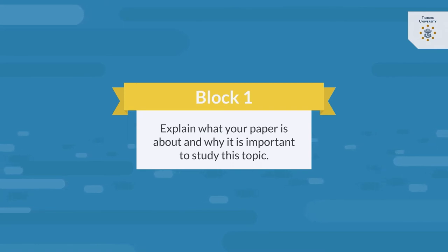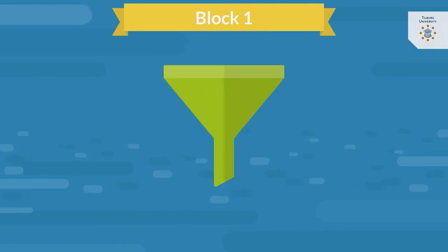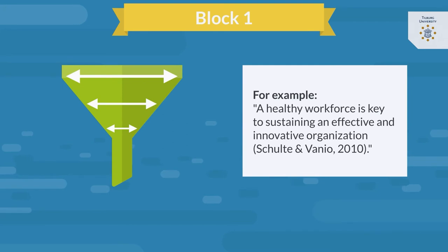The introduction has the shape of a funnel. The funnel starts at the top, broad with a very general introduction of the theme of your paper. If your paper is, for example, on a healthy work environment, you can cite a paper or report on this in a first sentence, stressing the relevance of this topic.